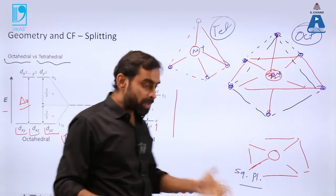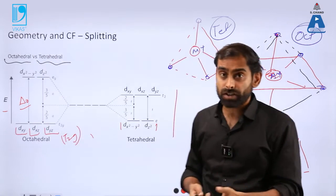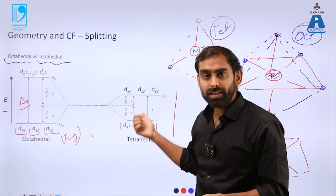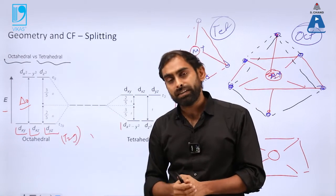On the other hand, when it comes to the tetrahedral geometry, in the tetrahedral geometry the splitting is taking place in the opposite fashion because xy, yz, and zx orbitals are now interacting with the ligand.